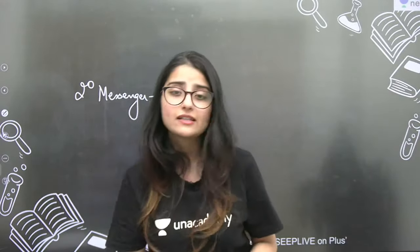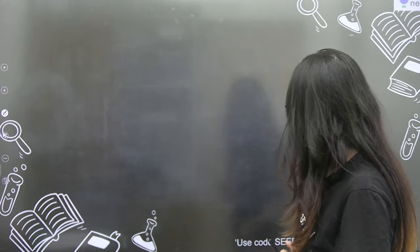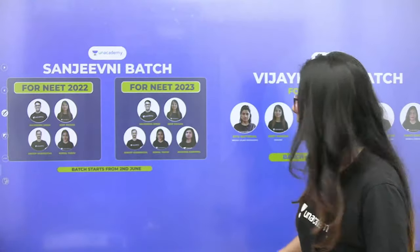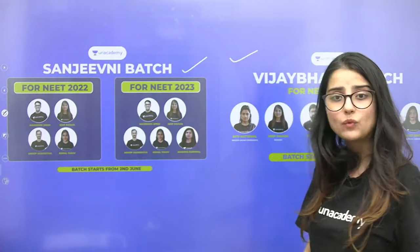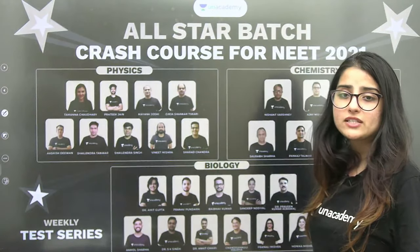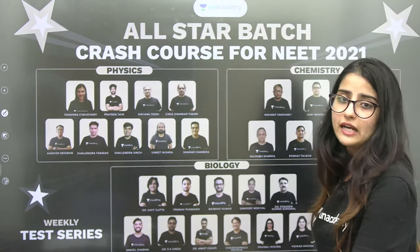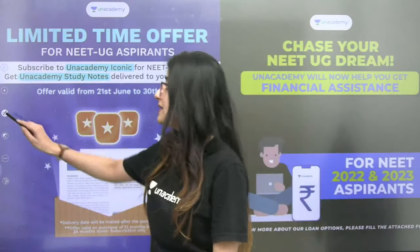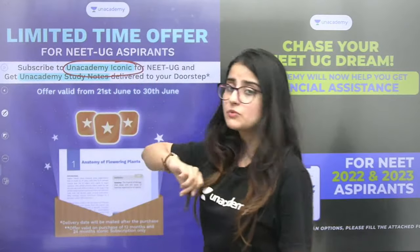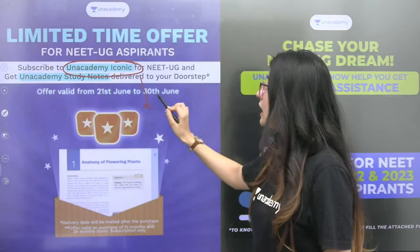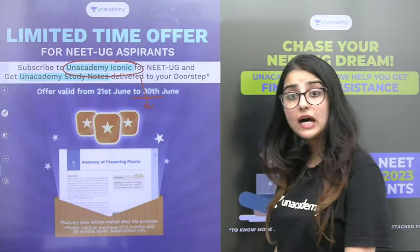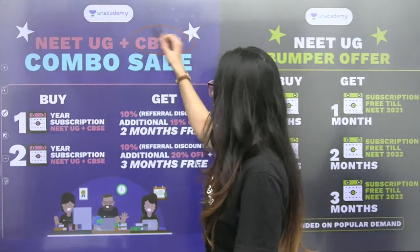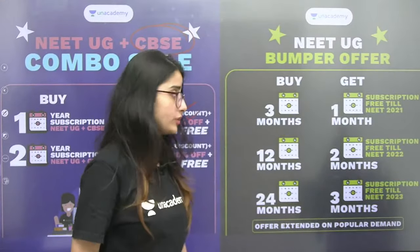If you like this session, then definitely like and share it. Plus you can also join me. Three batches are running - two batches of Sanjeevani and one batch of Vijaybhav. And also many batches like All Star batch, crash course, Pariksha batch, Samarpan batch. So in all batches you can enroll. And now is the best time because an offer is running - Iconic subscription. If you take by 30th of June, you get hard copy of notes. Also with NEET UG, if you make a combination of CBSE, then again you get huge discounts.